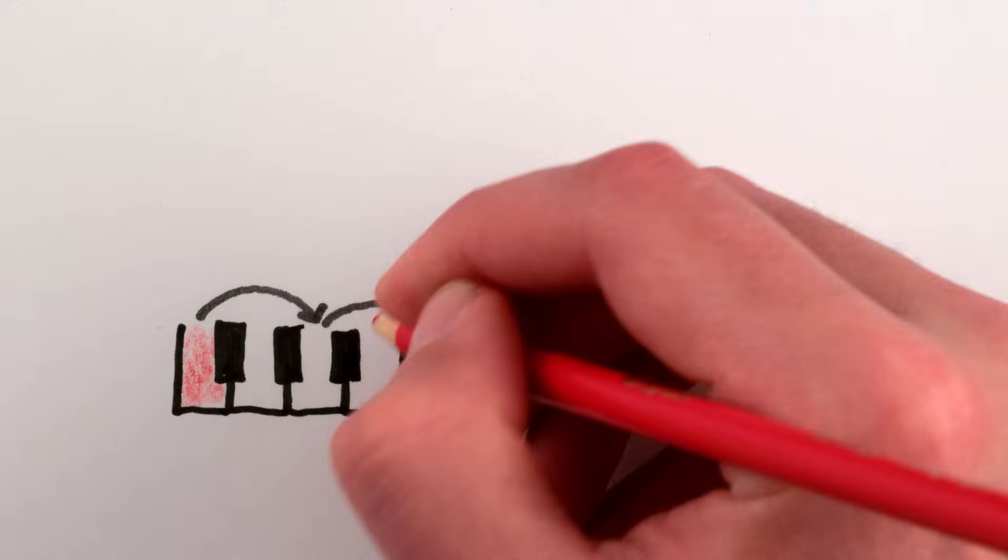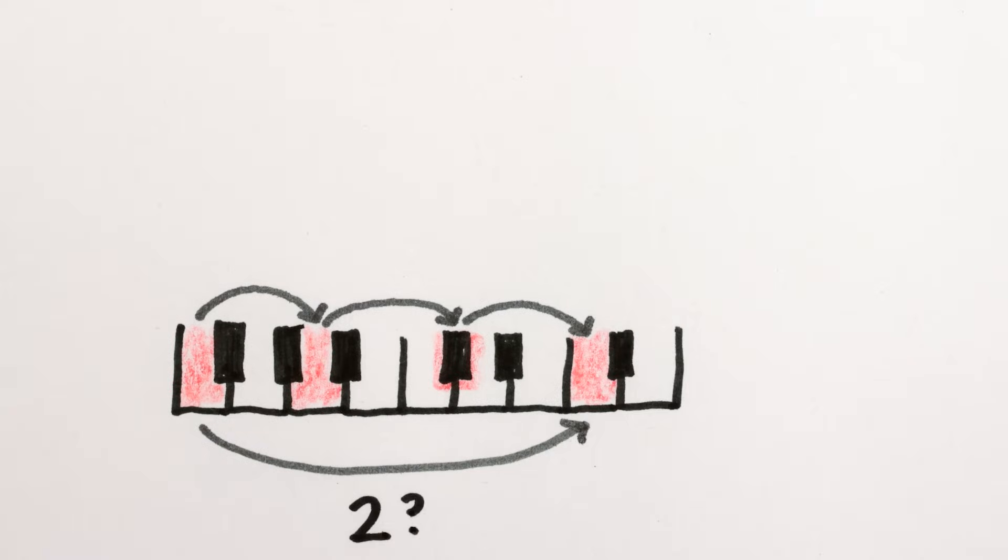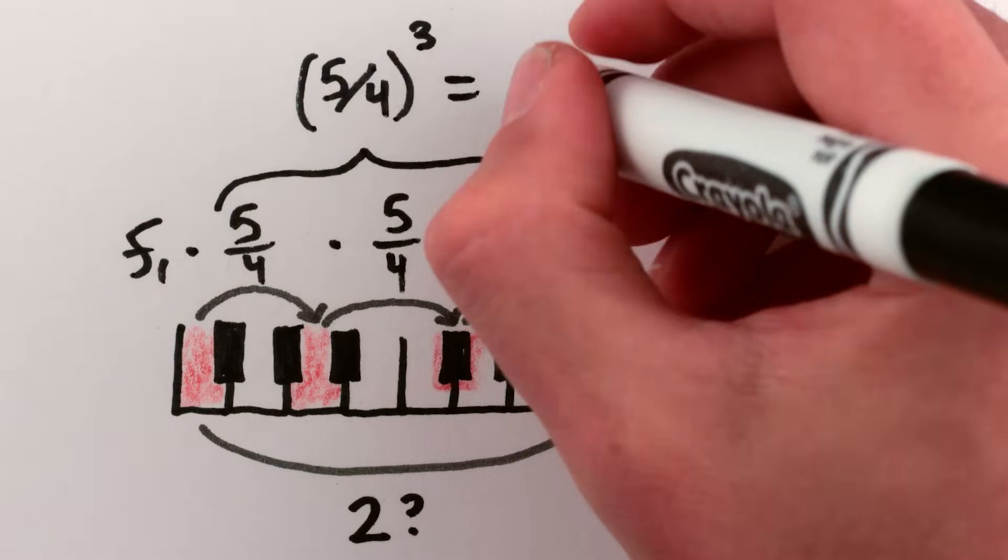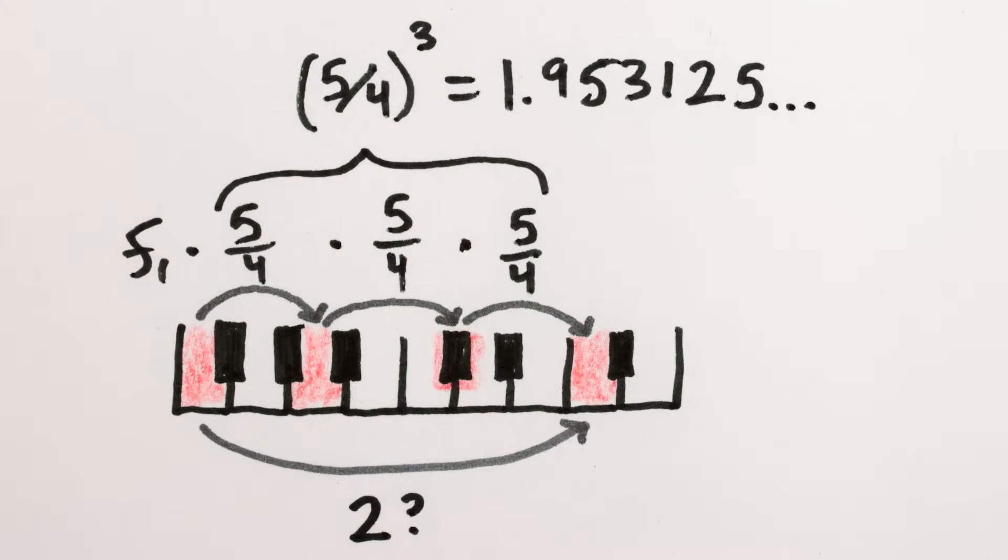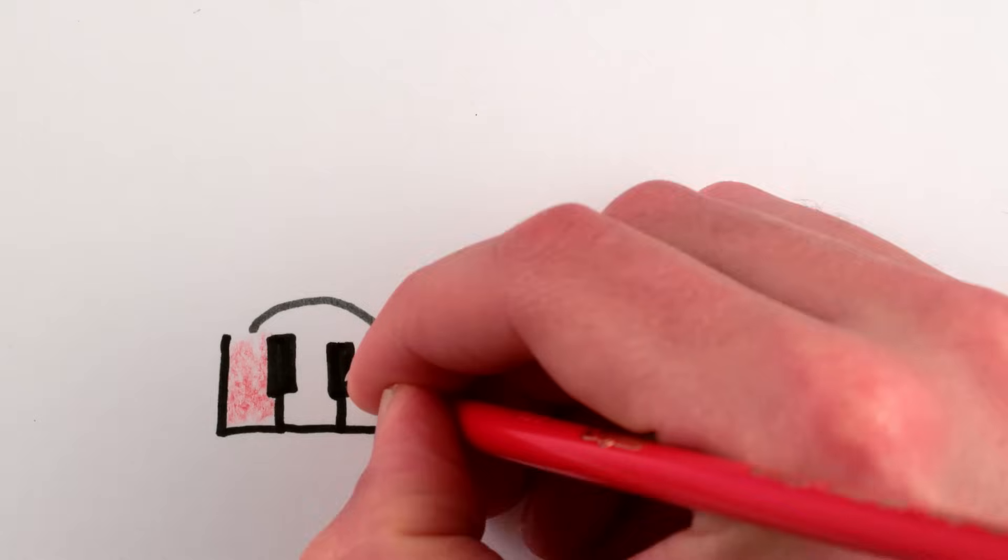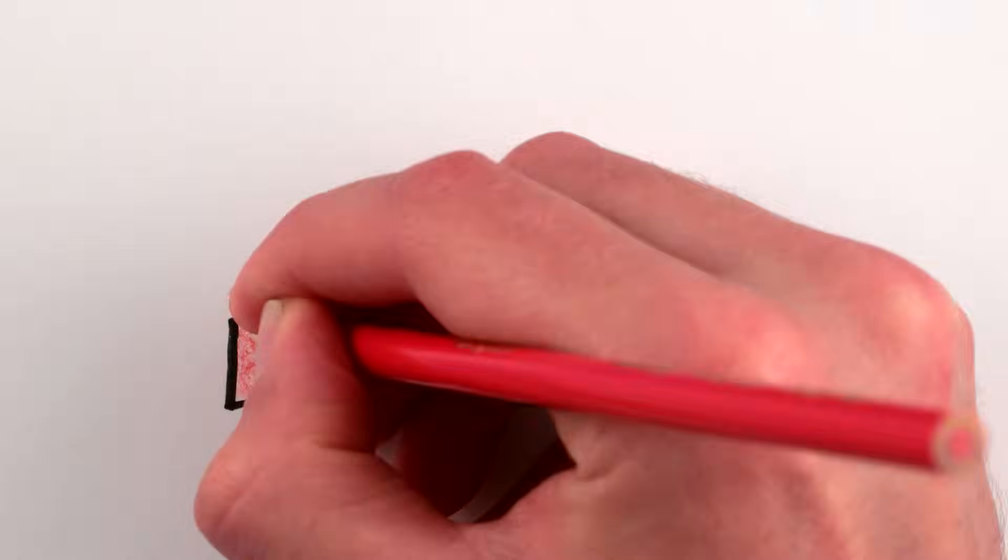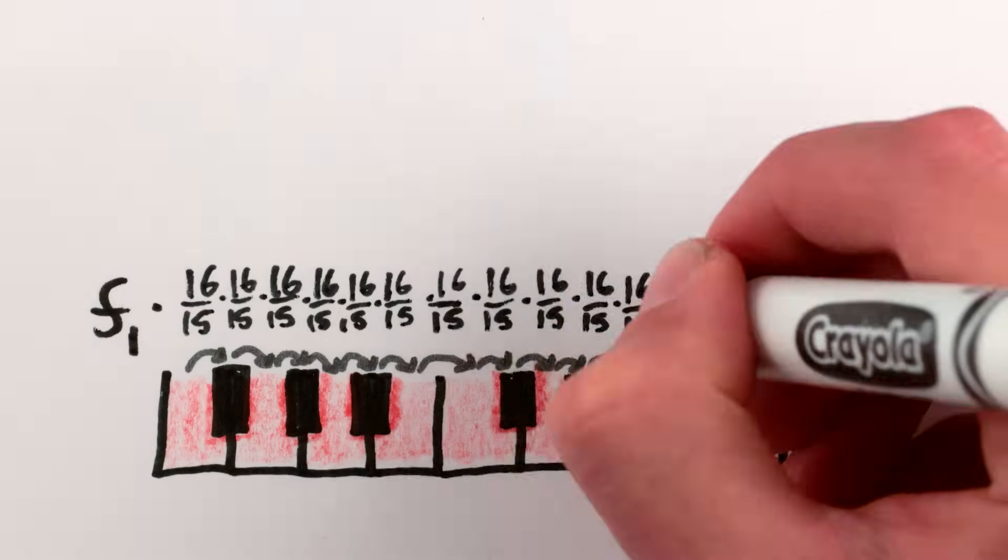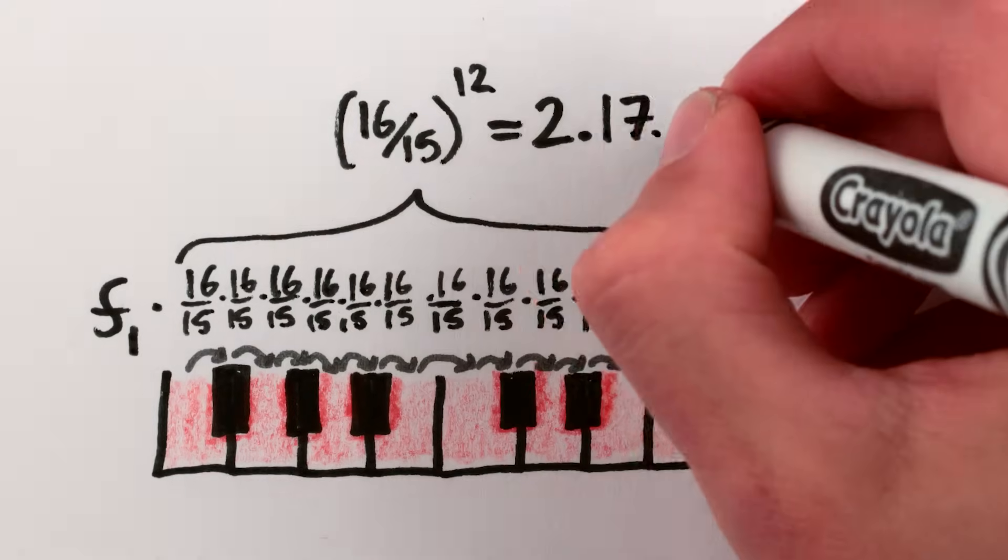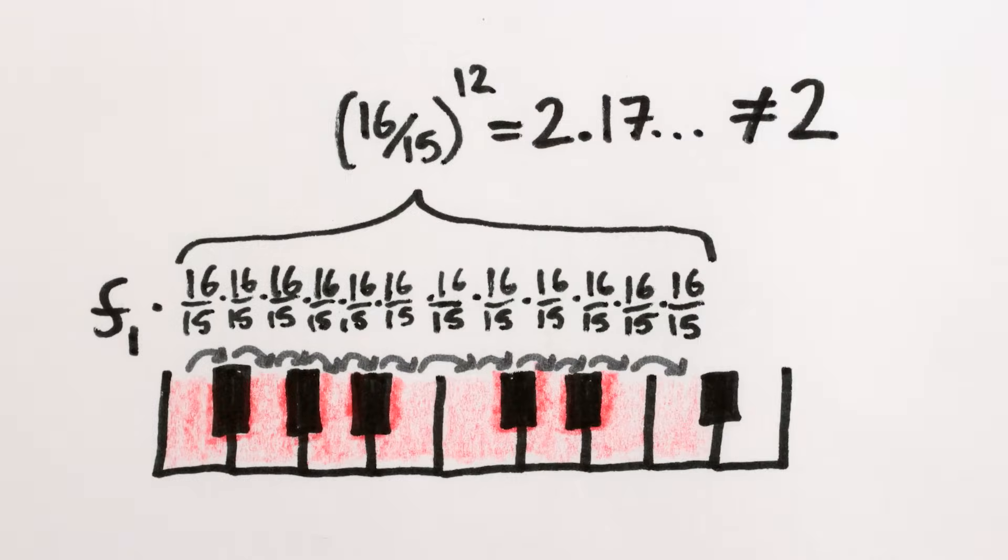If you tried harmonically tuning a piano using major thirds instead, you'd multiply the frequency by five fourths three times, or 1.953125. Still not two. Using fourths, you'd get 1.973, not two. Fifths gives 2.027 again. And don't even try using half steps. You'll be off by almost ten percent. And this is the problem.